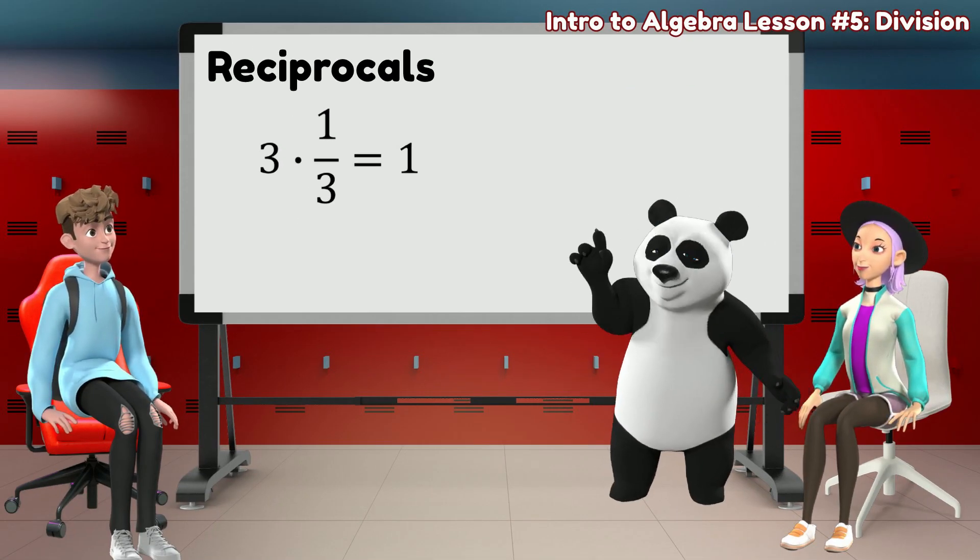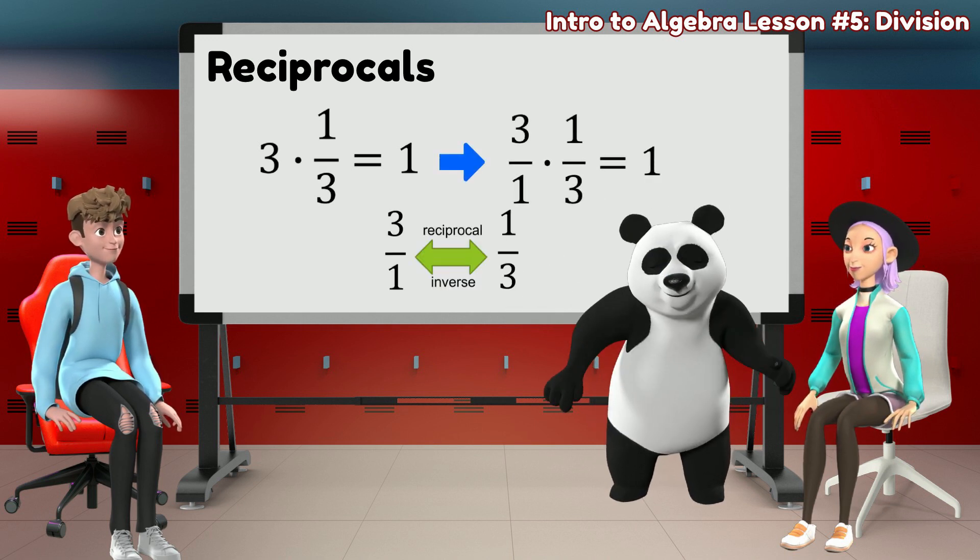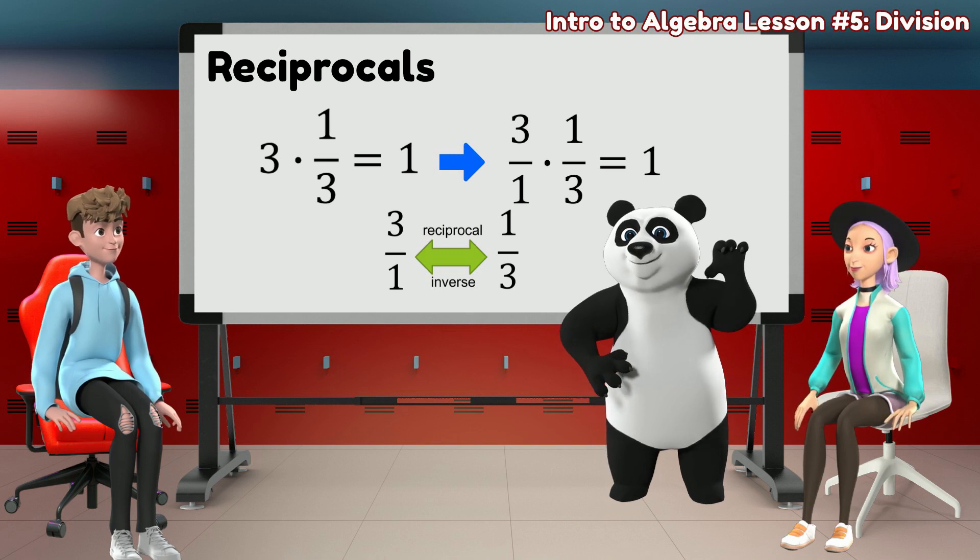Looking at this example again, 3 can also be expressed as 3 over 1, which tells us that getting the reciprocal of a fraction only means turning over or inverting the numbers.